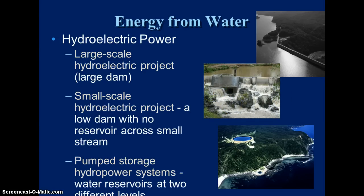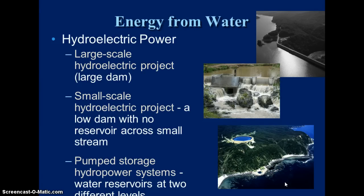A third type is called a pump storage system. You have an upper reservoir and a regular reservoir at a lower level. At peak energy times, water is released from the upper reservoir and turns a turbine as it falls. During low energy use times, electricity is used to pump the water back up, which helps avoid having to build an extra power plant.